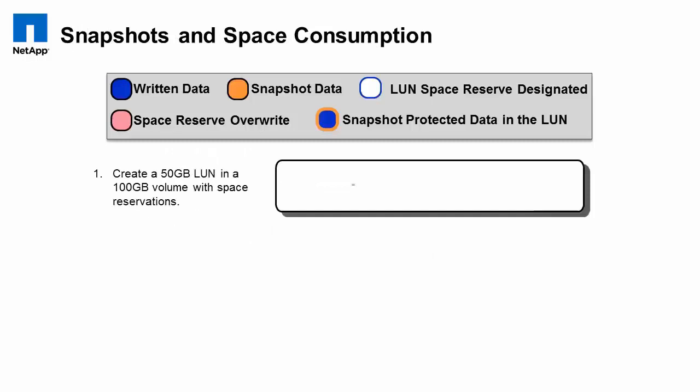We're going to walk through a couple of examples. This is going to illustrate effectively how snapshots, writes, and LUNs and space reservations work in an ONTAP volume. First, we create a 50-gigabyte LUN in a 100-gigabyte volume with space reservation enabled. This is 100% fractional reserve as well.